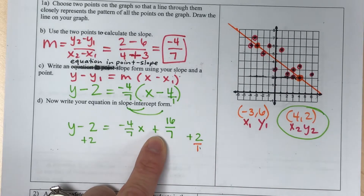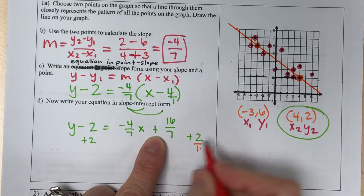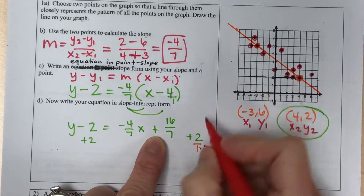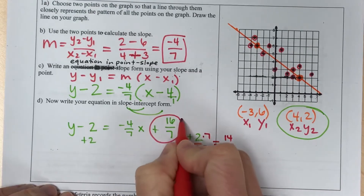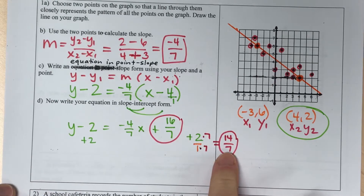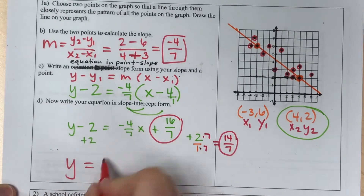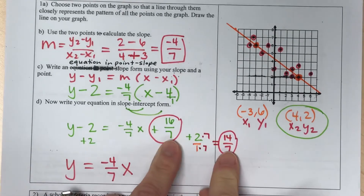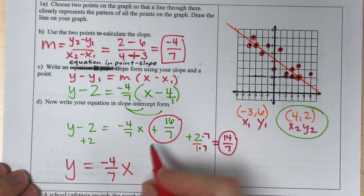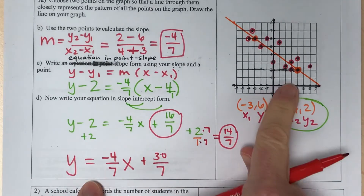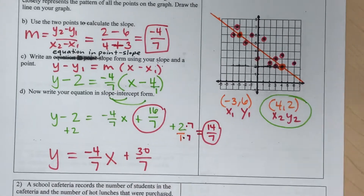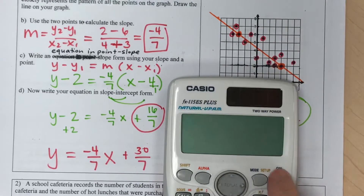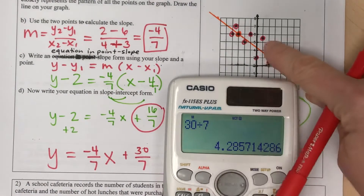The 2 is really 2 over 1, and I need to add it to a fraction with denominator 7. To create a common denominator, I multiply the top and bottom by 7, making 2 become 14/7. Adding 16/7 plus 14/7 gives 30/7. So the final equation in slope-intercept form is y = (-4/7)x + 30/7. The slope is -4/7 — go down 4, right 7 — and the y-intercept is 30/7, which is a little more than 4, between 4 and 5.